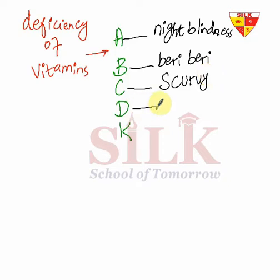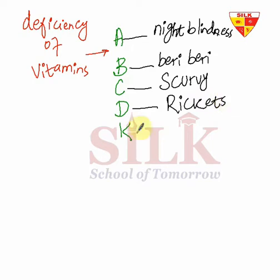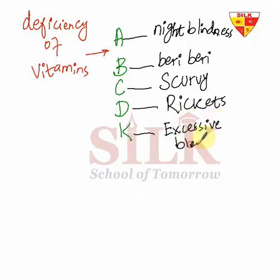Then from vitamin D deficiency we saw that rickets disease occurs, in which children's bones become weak and bend. From vitamin K deficiency, excessive bleeding occurs and bleeding from wounds does not stop.